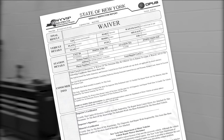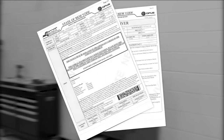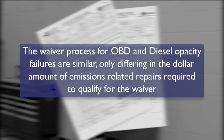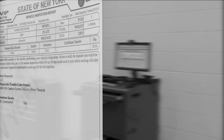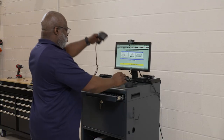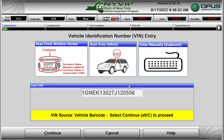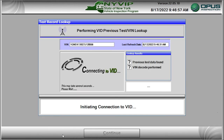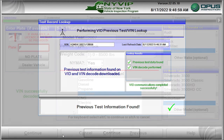The NYVIP3 software will process and issue OBD and diesel opacity emissions waivers. The software can also issue a 10-day OBD emissions waiver for readiness issues under certain conditions. The waiver process for OBD and diesel opacity failures are similar, only differing in the dollar amount of emissions-related repairs required to qualify for the waiver. We will demonstrate the waiver process on an OBD vehicle: a 2007 Chevrolet Tahoe that failed emissions inspection due to the presence of a Diagnostic Trouble Code or DTC. The vehicle has had emissions-related repairs performed. The scanned VIN returns a previous record from the VID.